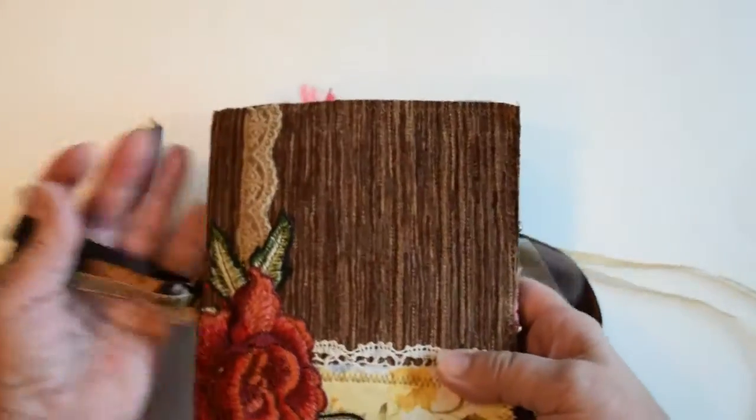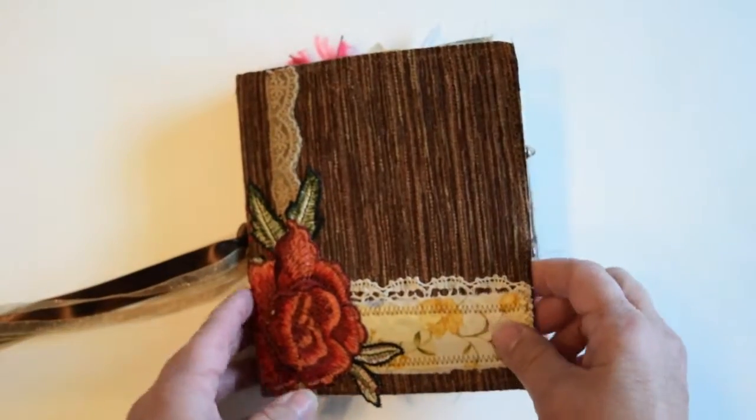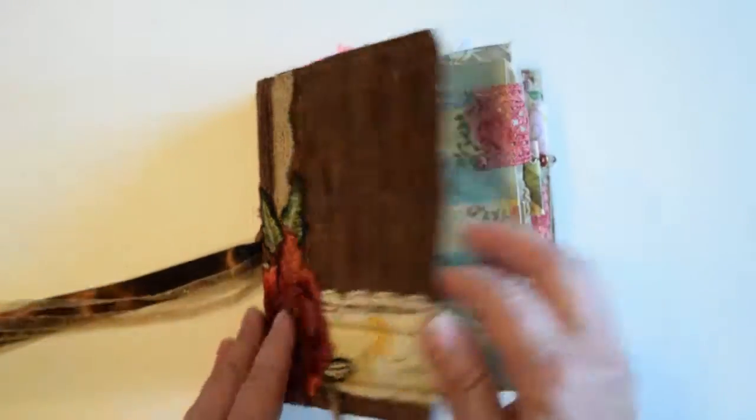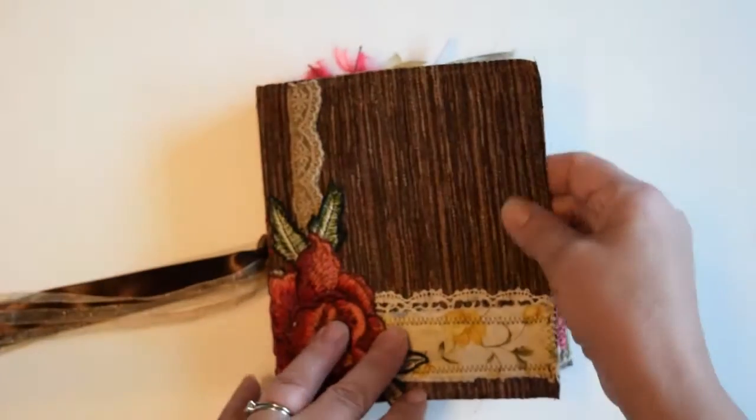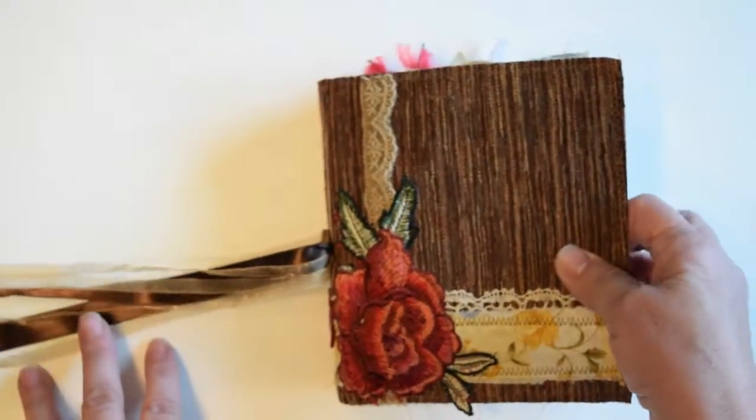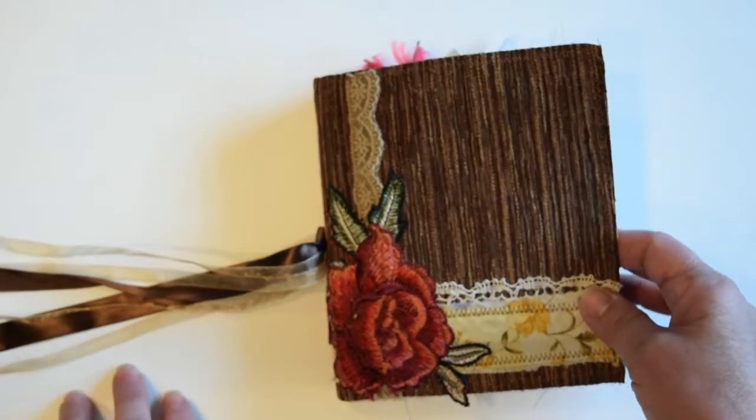It's a junk journal, soft covered with upholstery fabric here and lined with cotton on the inside. And it has a little bit of structure, a little poster board in the middle for structure.